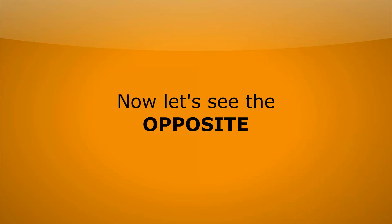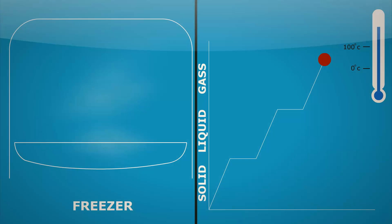So now let's see the opposite. If we put a bag of steam into the freezer, we should see the temperature slowly start to drop until we get the gas to around about 100 degrees C. This is when condensation should start to happen.